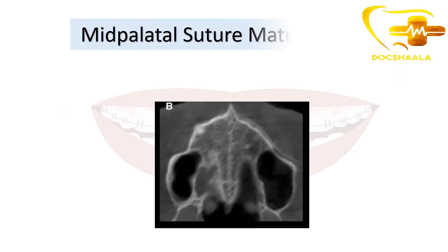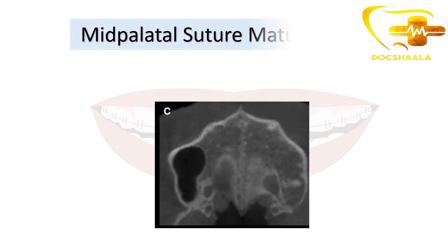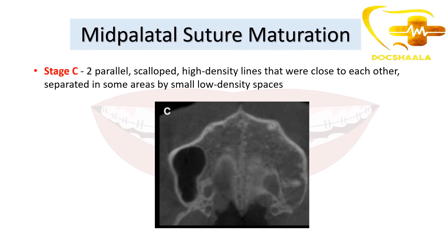Coming to Stage B: it shows a scalloped appearance of the high-density suture line. As you can see, the appearance of the suture line is scalloped — appearing in a wave-like pattern.